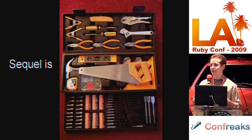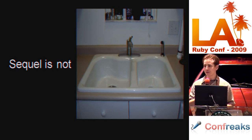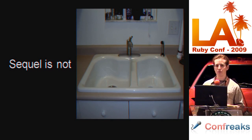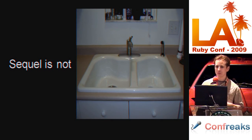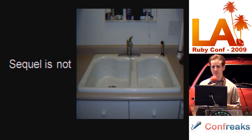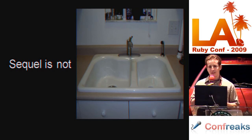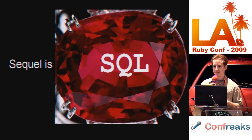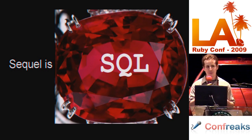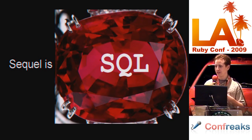Sequel is not a kitchen sink. If you put in a little effort, you can build whatever type of kitchen sink you want with it. The toolkit versus kitchen sink approach is one thing that differs between Sequel and other Ruby database libraries. They say a picture is worth a thousand words, but in this case it's only three: Sequel at its core is SQL in Ruby.